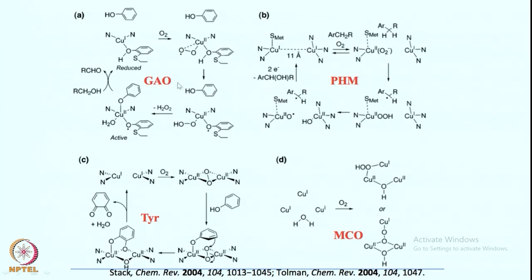Let us briefly look at galactose oxidase. It essentially converts alcohol to aldehyde. This enzyme has 2 histidines and a cross-linked tyrosine moiety — essentially a phenol, 2 histidine, and phenol moiety. Oxygen reaction with this copper center gives a copper(II) superoxo intermediate via one electron transfer. This copper(II) superoxo intermediate then abstracts a hydrogen atom from the phenol to give a phenoxy radical and a copper(II) hydroperoxo intermediate.